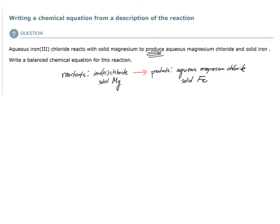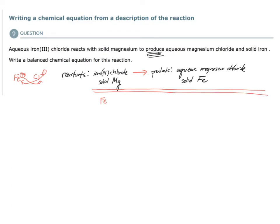Let's look at our reactants first. Aqueous iron(III) chloride — how do I derive its chemical formula? Iron(III) chloride is comprised of an iron(III) cation and a chloride anion. Breaking it into its constituent ions: Fe³⁺ and Cl⁻¹. Using the crisscross method, the charge value of one ion becomes the subscript of the other, giving us FeCl₃. That is a previous topic — naming ionic compounds.